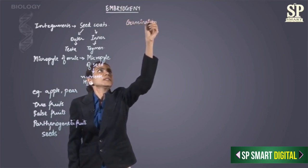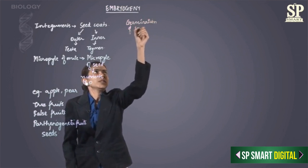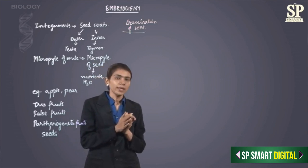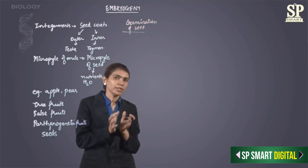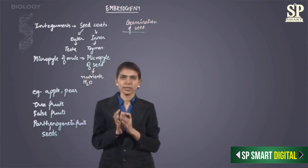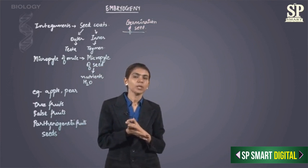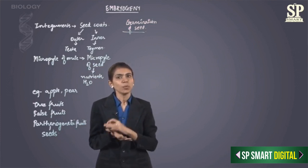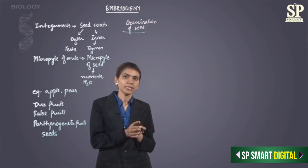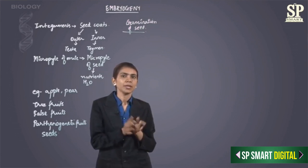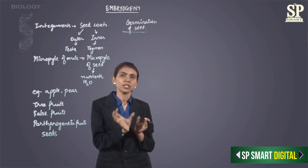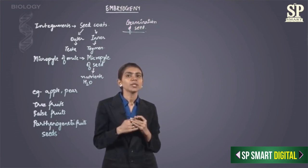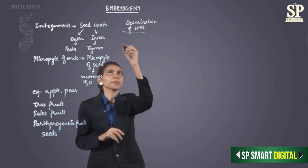Once the seed is formed it undergoes germination. At the end of the stage wherein the embryo has cotyledons, radicle, and the plumule, it becomes dormant. When this dormant seed becomes active, it is called germination. The germination of seed is of three types.